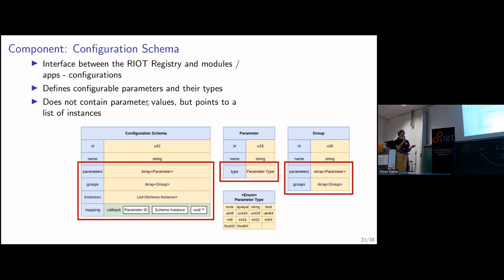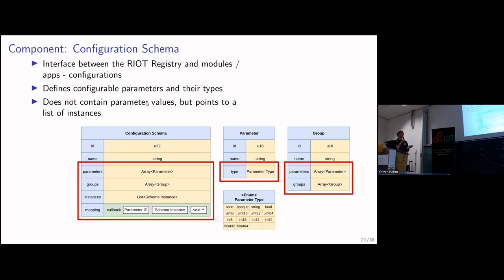Inside the schema, we also have a list of schema instances. So if you have a driver and you want to use a configuration schema to provide one configuration, you will add an instance and register it at the registry, and the registry will put it inside the schema's instance list. There is also a mapping function — you give it a parameter and a schema instance, and the schema instance contains the actual primitive values. The void pointer output is the pointer to the actual location in storage where your parameter value is, so you can then either read it out or change it.